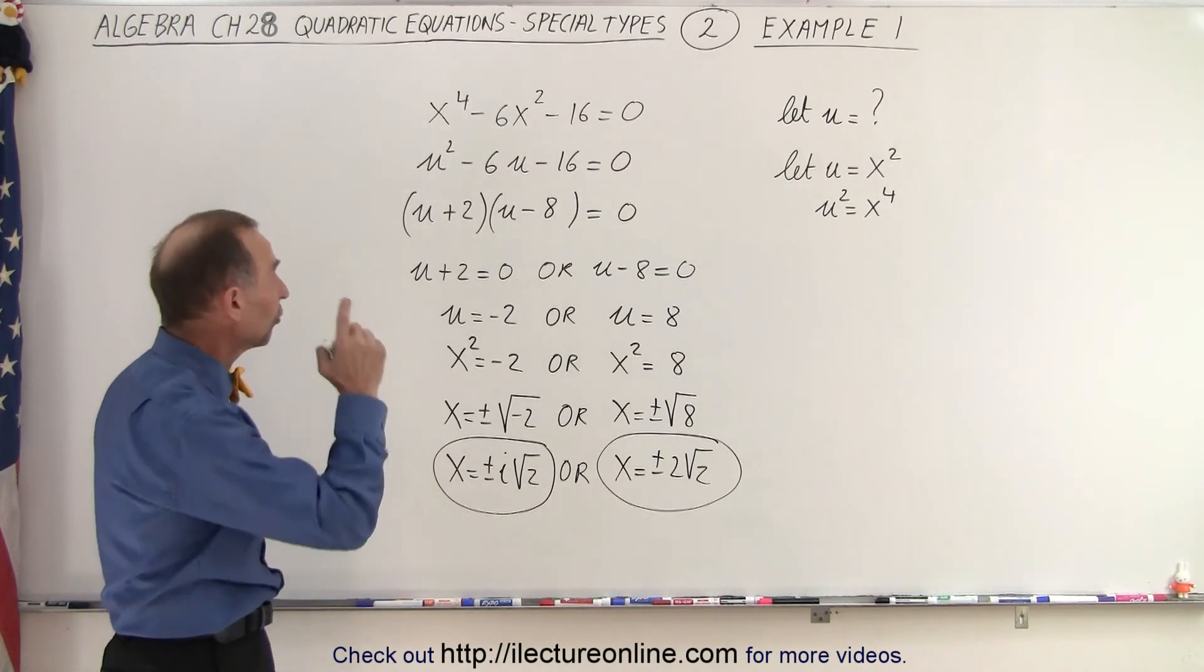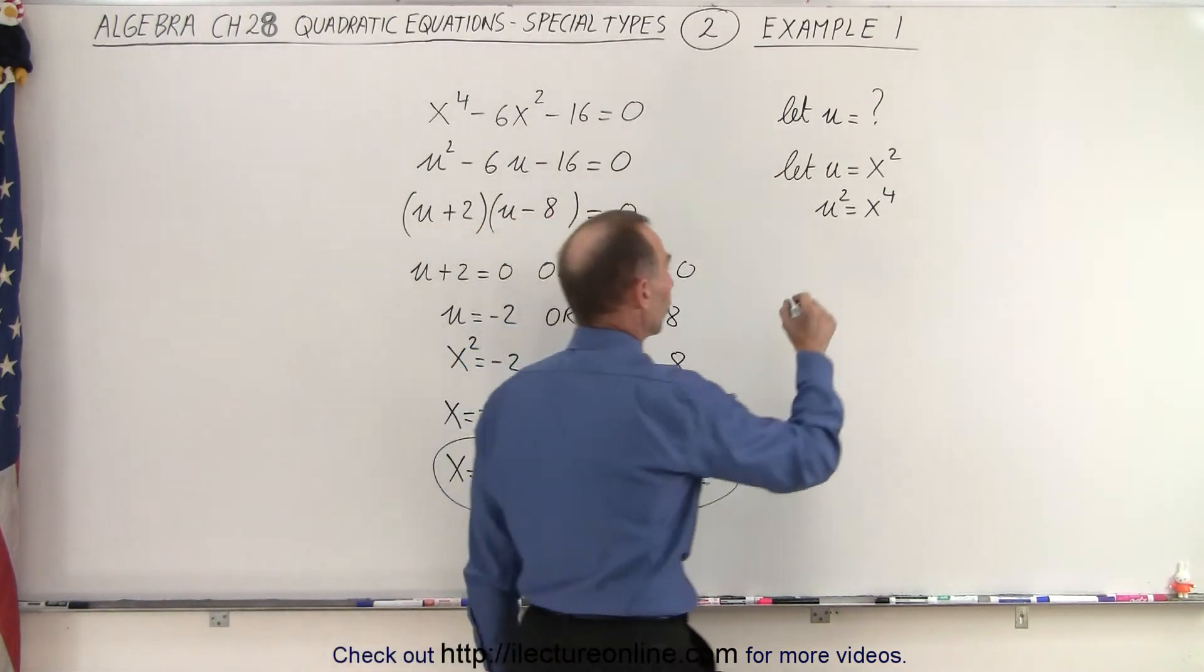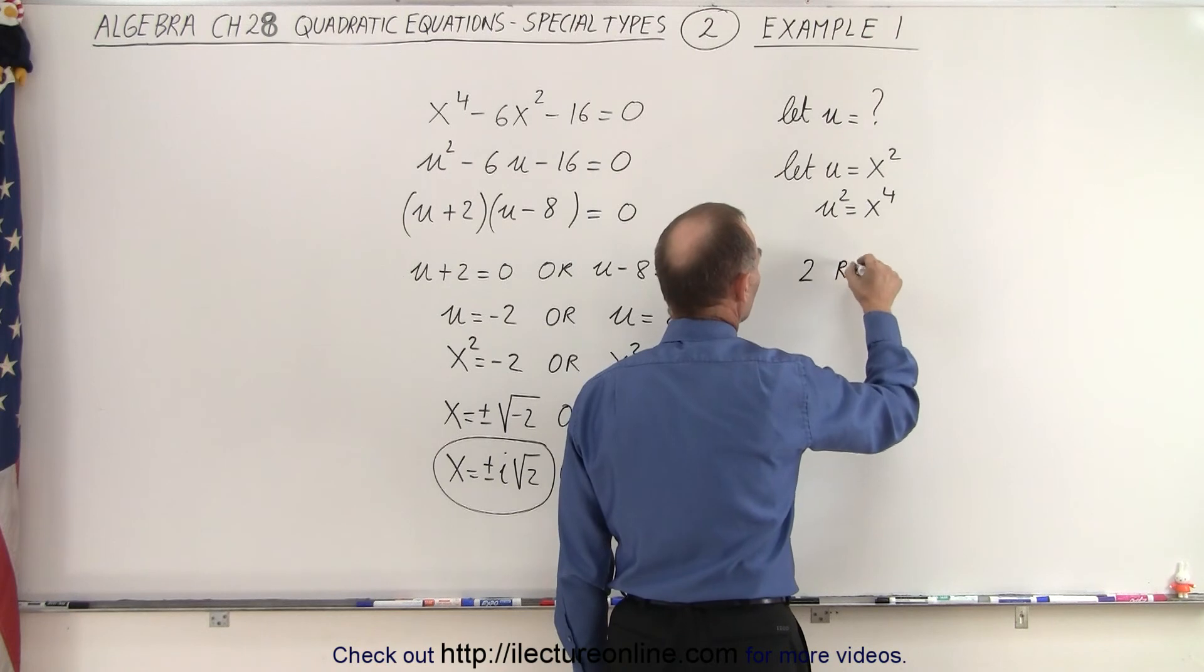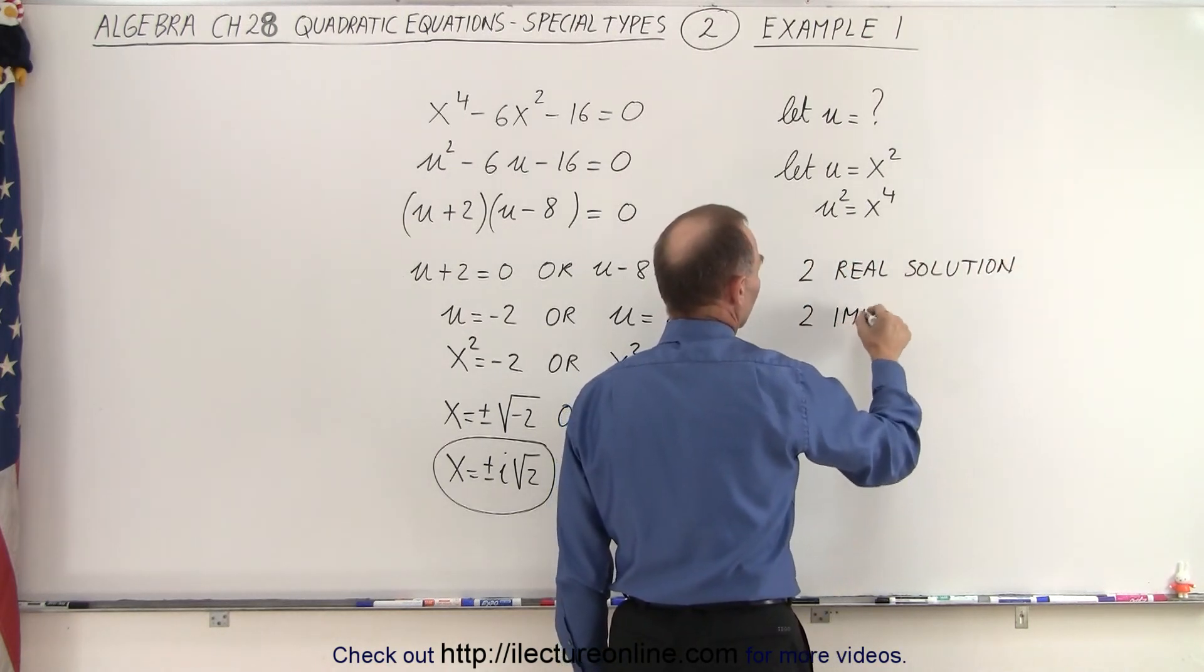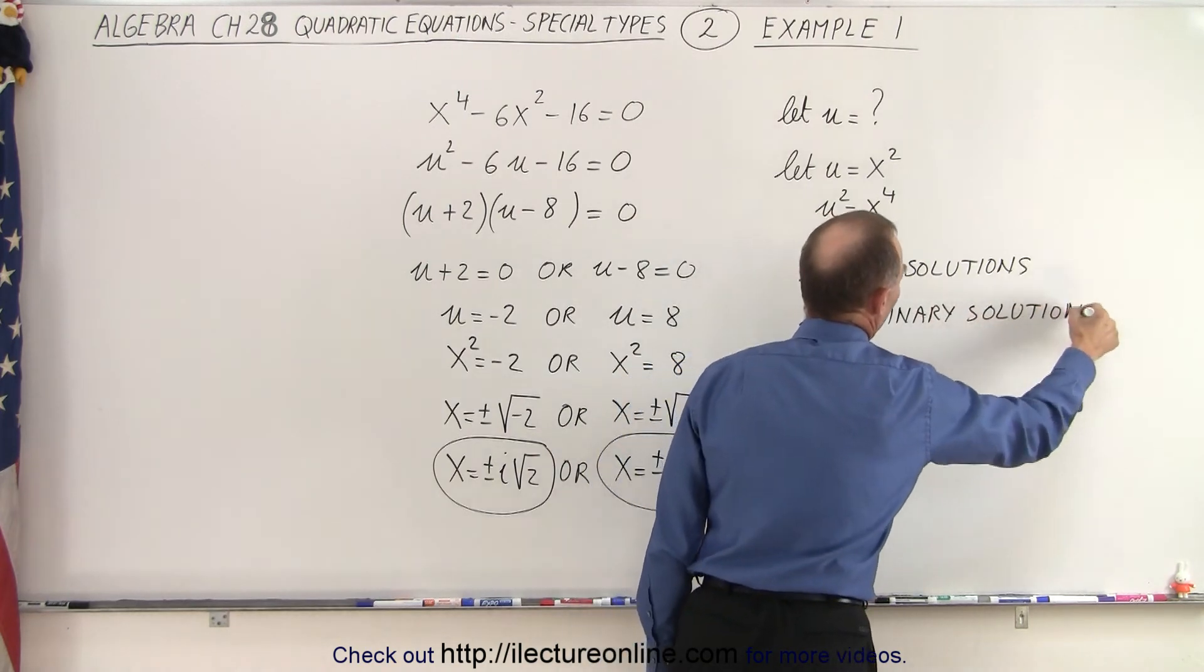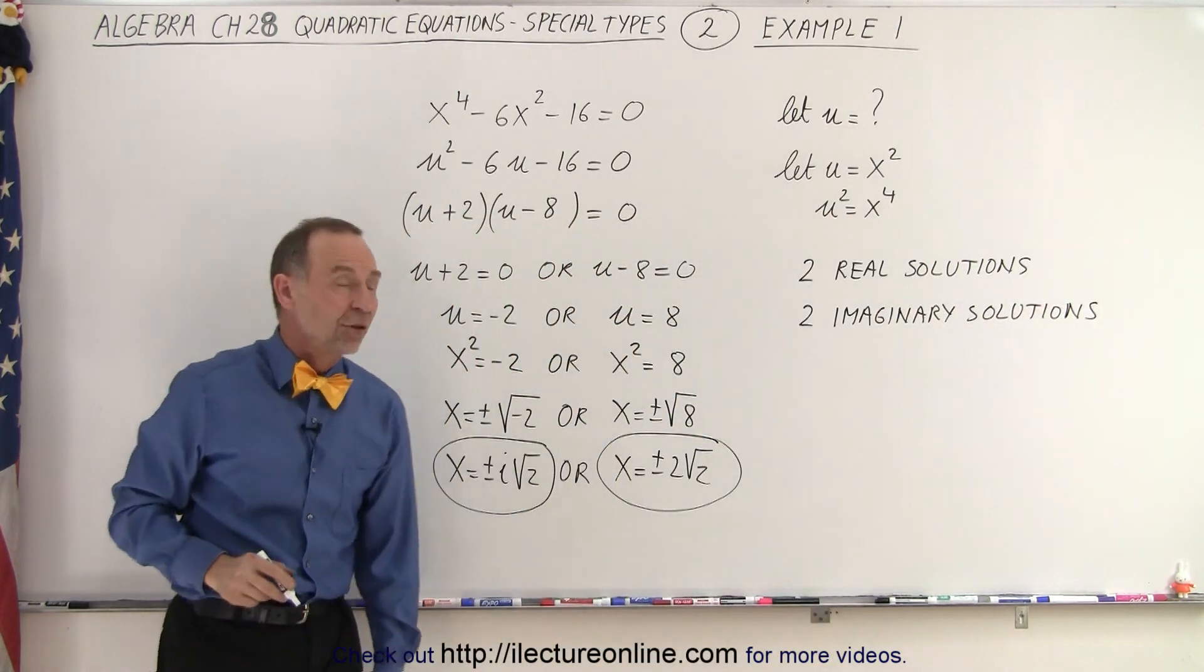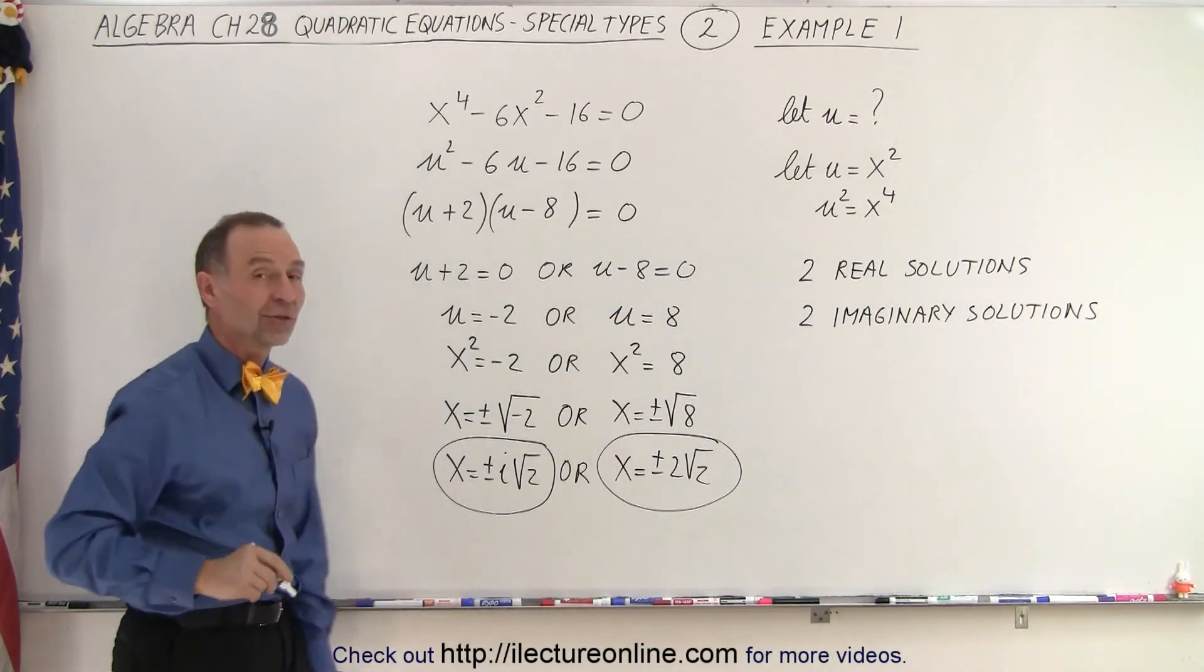I have a total of four solutions out of that equation. So, I have two real solutions and I have two imaginary solutions. And that's how we solve an equation that looks like that.